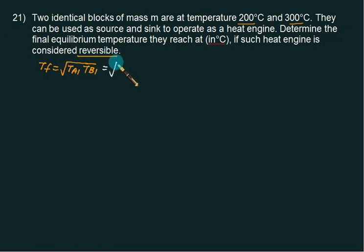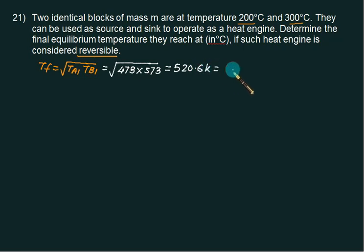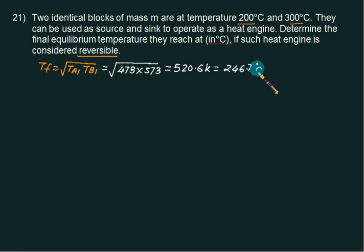We have the square root of 473 (200 + 273) multiplied by 573 (300 + 273) Kelvin. This answer is 520.6 Kelvin. You can directly use the relation — square root of T_a1 and T_b1 — and in degrees Celsius this value will be 246.7.